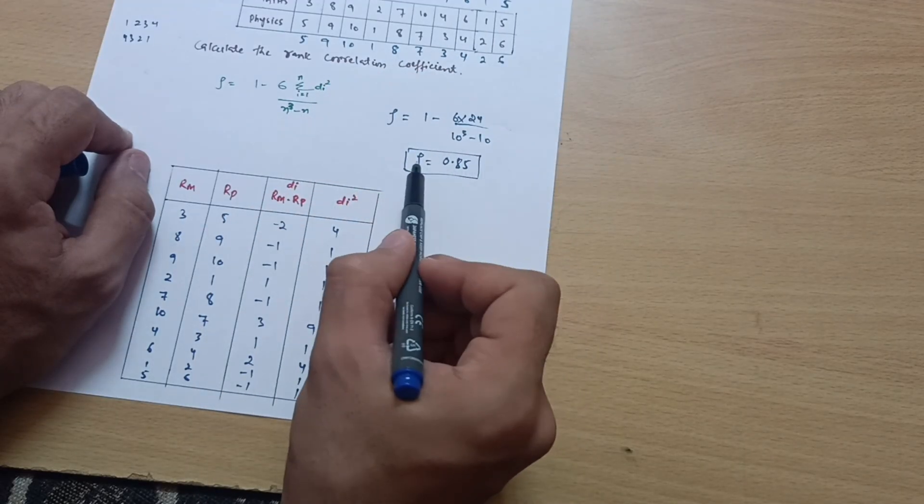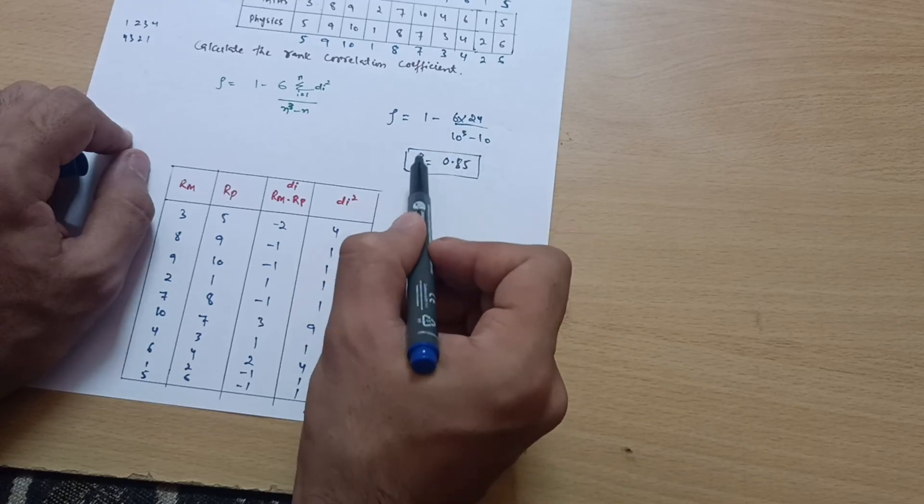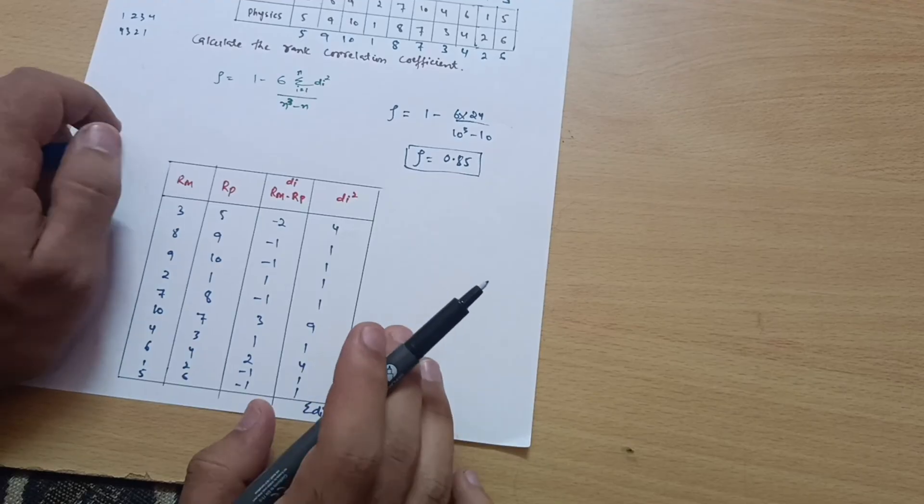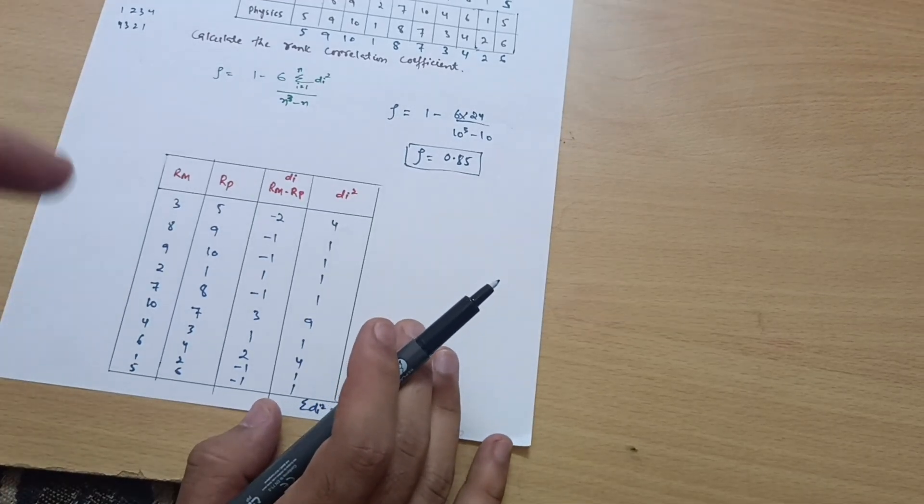Once you calculate this in the calculator, you will get rho is equal to 0.85. So this is the rank correlation for this particular question. This is all about today's lecture. I hope this is clear to you.